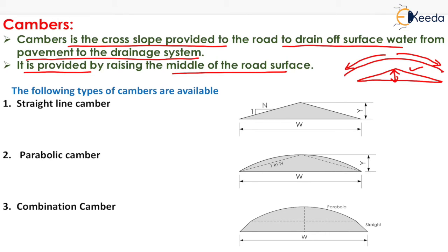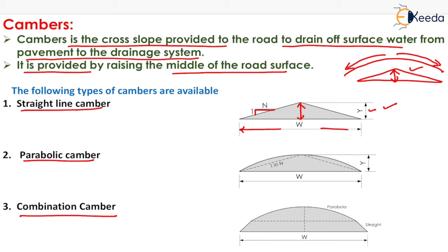We generally have three types of camber: straight line camber, parabolic camber, and combination camber. Now straight line camber is shown here. The height is indicated by Y, the slope is generally 1 in N as shown here, and the overall width is shown here as W.